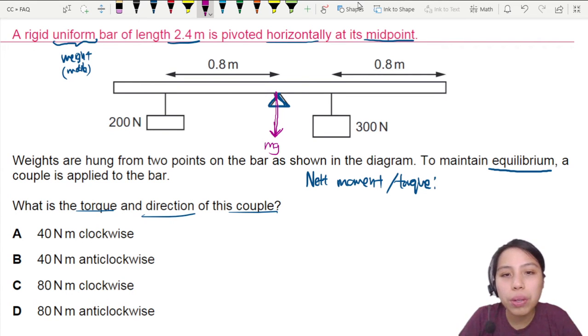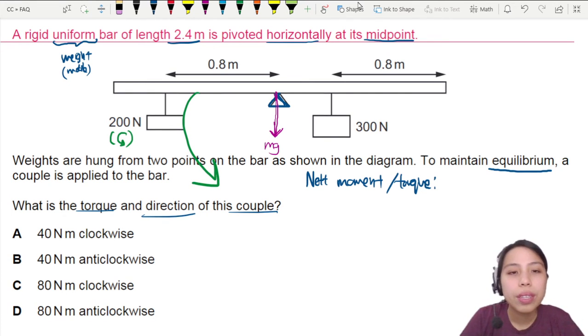Now, the other force that will cause a moment is the 200 on the left and the 300 on the right. Let's look at the 200 first on the left. Anti-clockwise is going to cause this whole bar to rotate in that order. Thanks to a certain distance D and a certain force F.